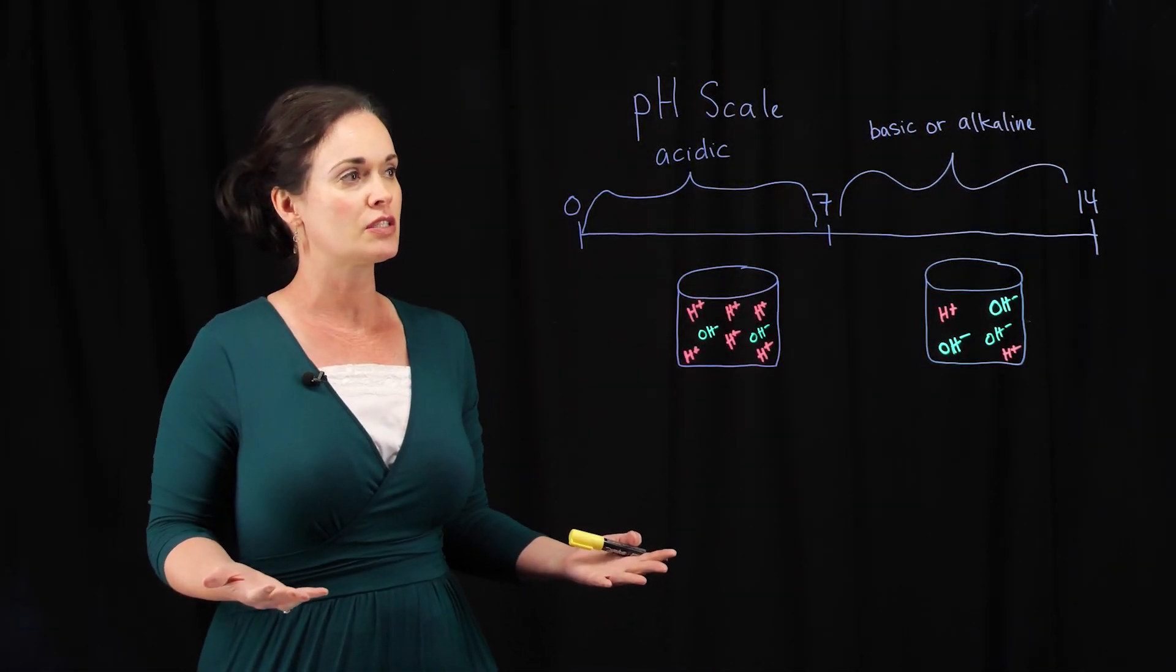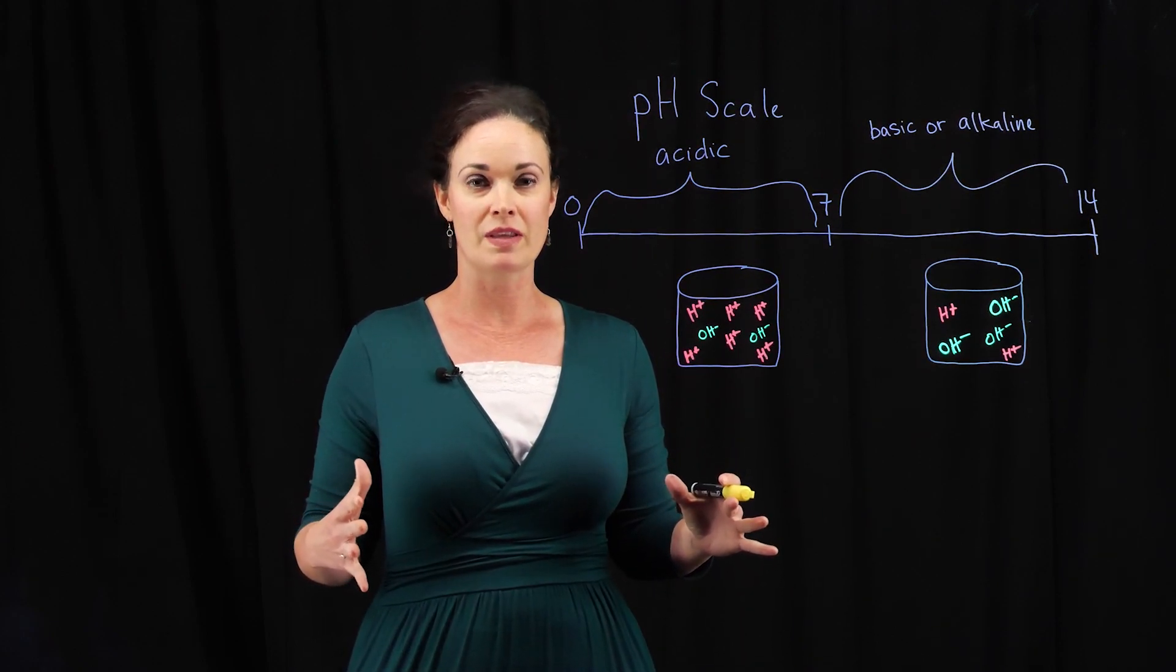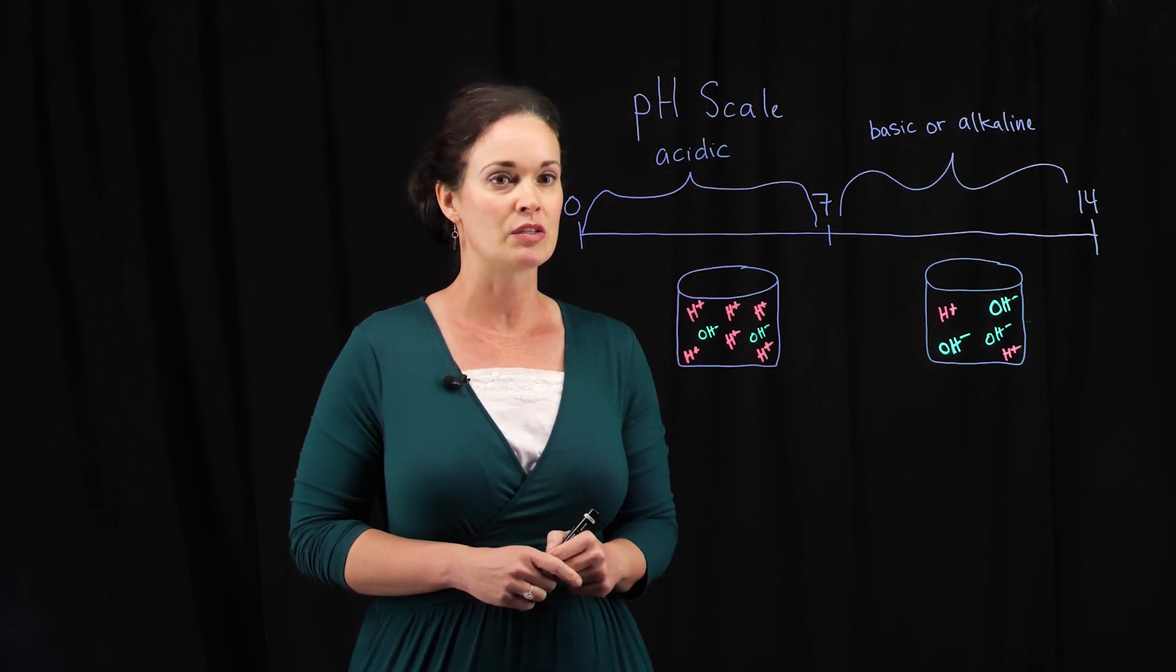The pH scale ranges from 0 to 14, with 7 being right in the middle. 7 is what's considered to be a neutral pH.